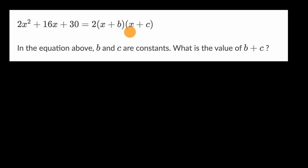All right, now let's work through this together. It looks like what's happening is we have a quadratic on the left, and then on the right, we have that same quadratic that is factored out, although they don't tell us what B and C are. We have to figure that out.